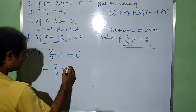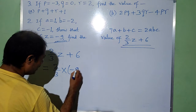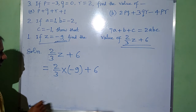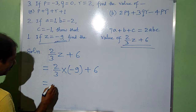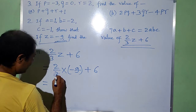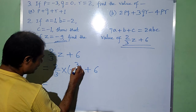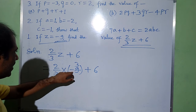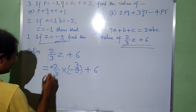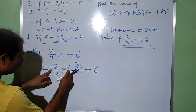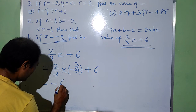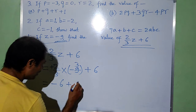So we substitute minus 9, giving us 2 by 3 into minus 9, plus 6. The 3 in the denominator will cancel with the 9, giving 3. The minus symbol will remain, so this becomes minus 3. Now plus into minus gives minus 2 into 3, that is minus 6. So we have minus 6 plus 6.